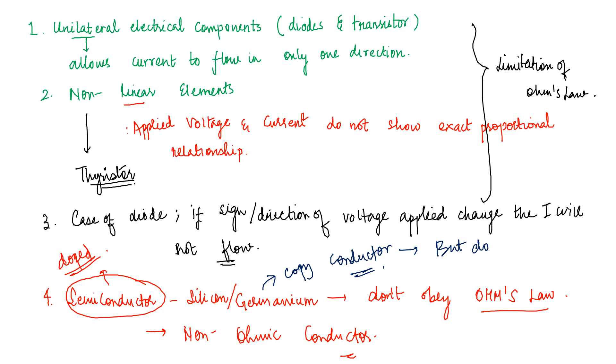But do not copy conductor's property. So that's why we can call them non-ohmic. Their relation of voltage and current will not be proportional. They will be like non-linear elements.